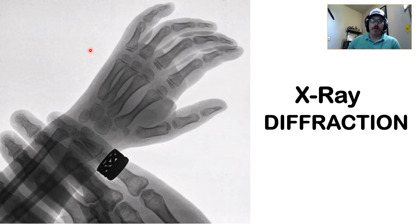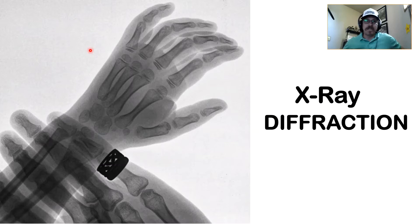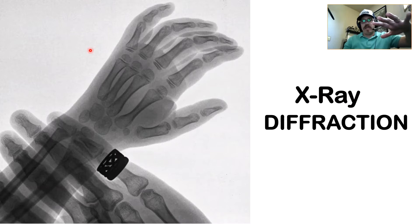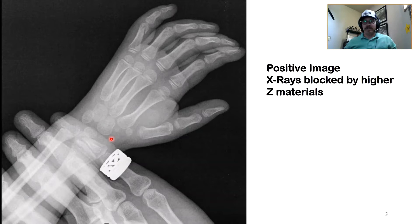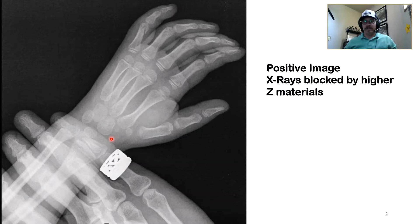The x-ray passes through the human body and onto a recording plane — in the olden days, photographic paper; these days, pretty much a digital sensor. This is actually a negative image: where a lot of x-rays pass through an area, it develops the photographic paper and turns it black. The area where x-rays were blocked — like by a ring — shows up differently. This is a positive image: x-rays were blocked by higher-Z materials. Bones are calcium, which is higher-Z than carbon.